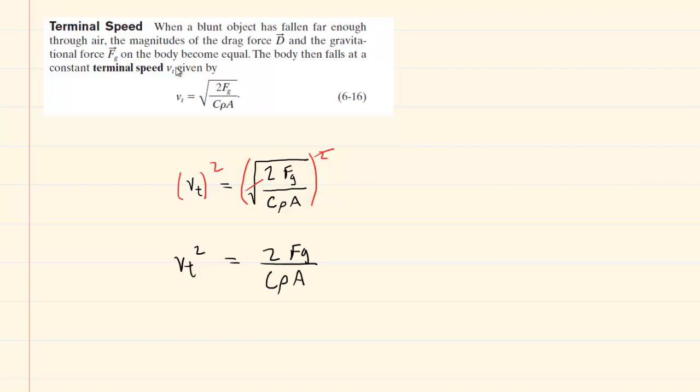We're trying to solve this equation for a, so the next thing we can do is to multiply both sides of the equation by the area a. This is effective because then the areas would cancel out on the right-hand side. So now we have area times terminal speed squared equals 2fg divided by c times rho.